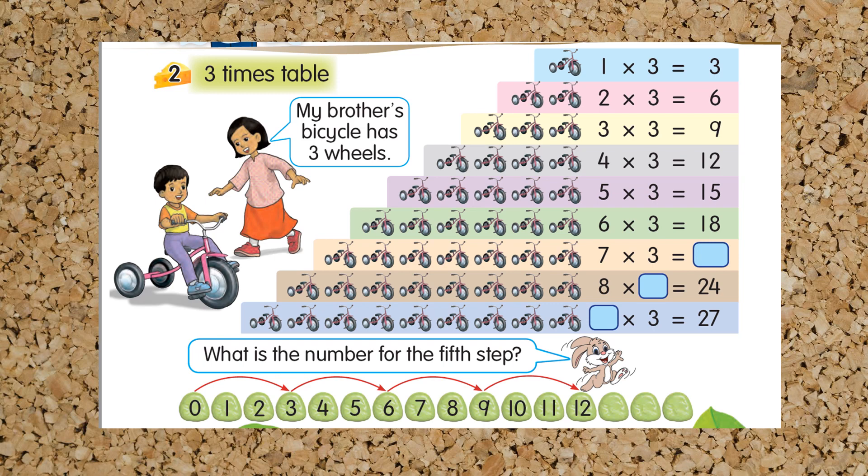Now let us look at 3 times table. 1 times 3 is 3, 2 times 3 is 6, 3 times 3 is 9, 4 times 3 is 12, 5 times 3 is 15, 6 times 3 is 18. And 18 plus 3, you will get how many?